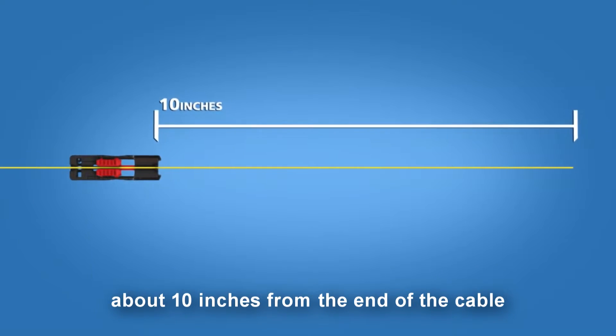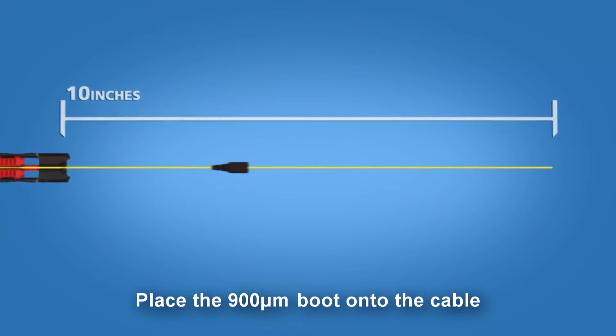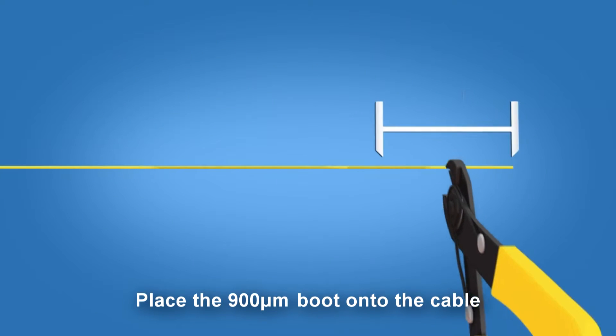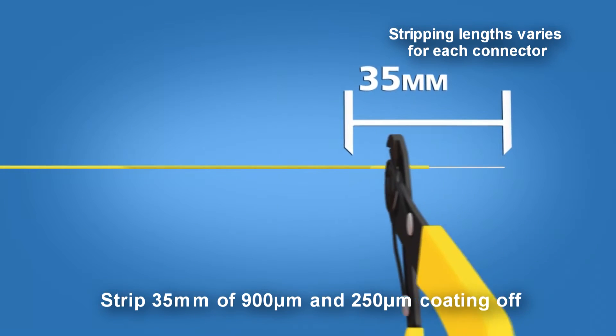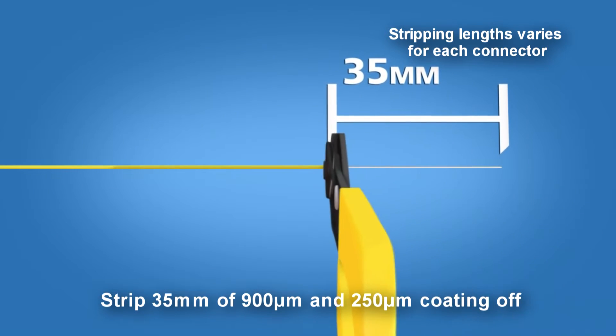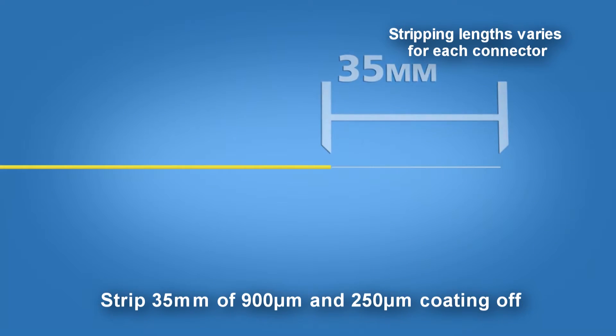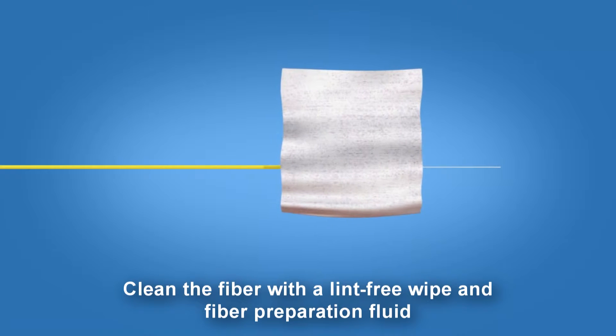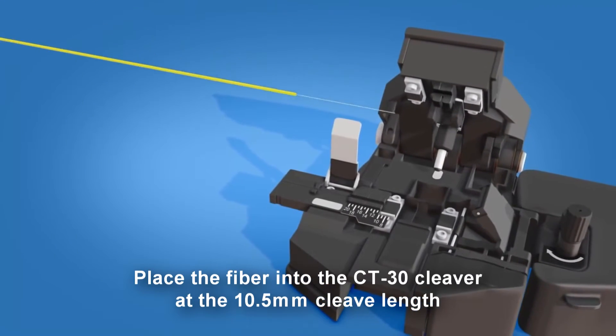Place the 900 micron boot onto the cable. Strip 35 millimeters of 900 micron and 250 micron coating off. Clean the fiber with a lint-free wipe and fiber preparation fluid, then place the fiber into the CT-30 cleaver at the 10.5 millimeter cleave length.